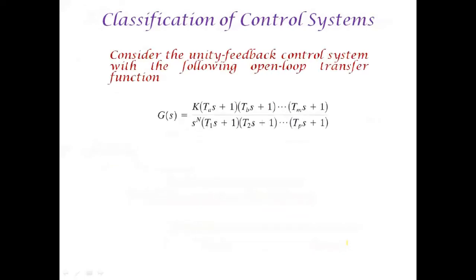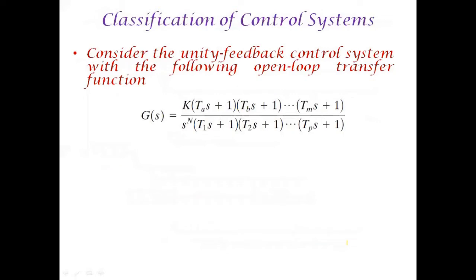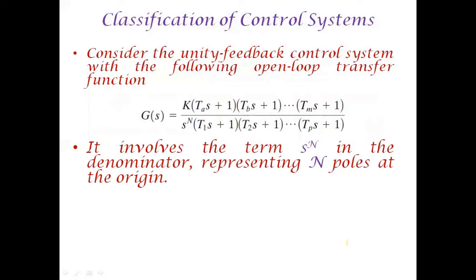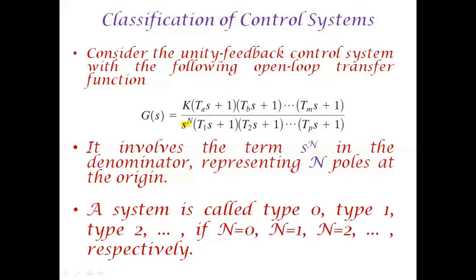Let us move on to the classification of a control system. Consider a unity feedback control system with open loop transfer function G(s) = K·(Tₐs+1)(T_bs+1)···(Tₘs+1) divided by s^n·(T₁s+1)(T₂s+1)···(Tₚs+1). This general representation involves s^n in the denominator, representing n poles at the origin. A system is called type 0, type 1, or type 2 if n=0, n=1, or n=2 respectively.